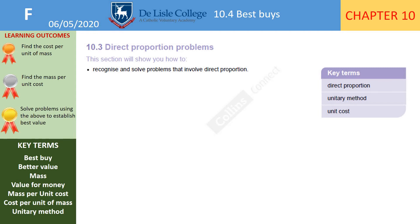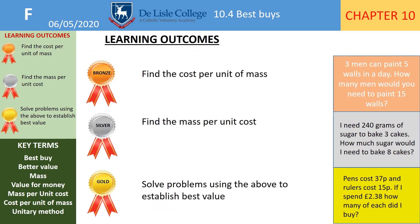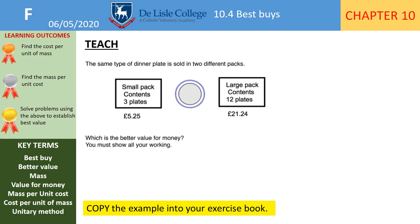This lesson, 10.4 best buys, again builds on what we've had in 10.3 on direct proportion. Bronze: finding the cost per unit of mass. Silver: find the mass per unit cost. Gold: solve problems using the above to establish the best value. You'll end up doing either the bronze or silver approach for each question, achieving gold status.